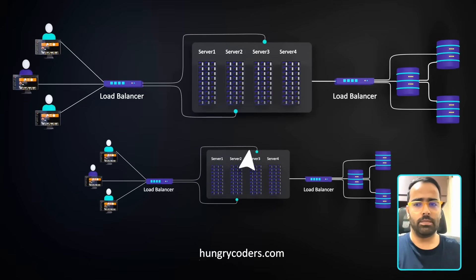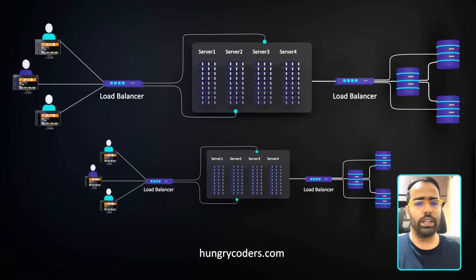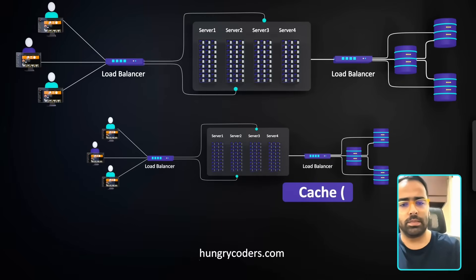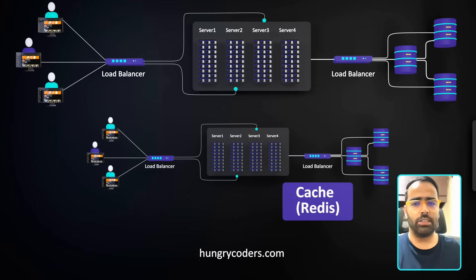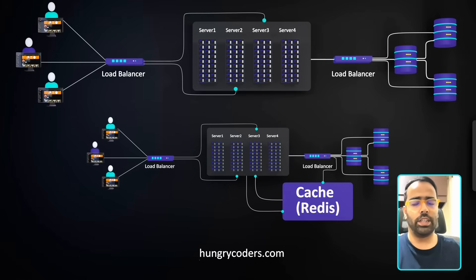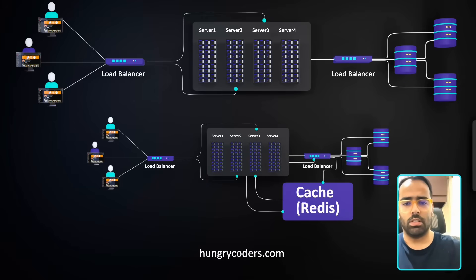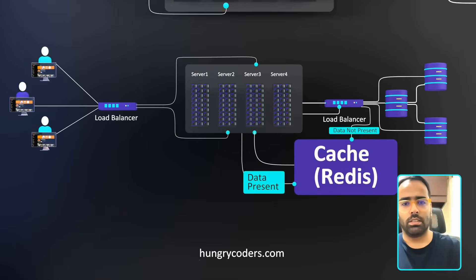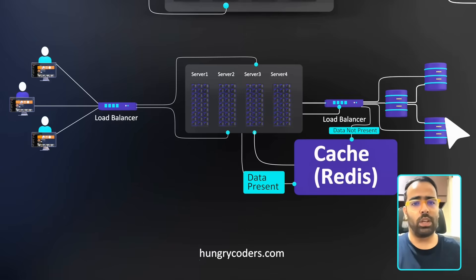The next improvement is introducing a caching mechanism to avoid hitting the database every time. Using something like Redis, the application first checks if the requested data is present in cache. If it is, the response comes from cache; if not, it calls the database through the load balancer.